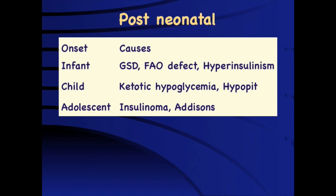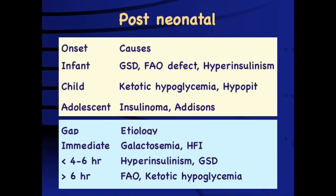In the post-neonatal age group, the age of onset gives clues. Conditions associated with the glycogenolytic or gluconeogenic pathway present around infancy, as do GHD and fatty acid oxidation defects. Childhood presentation between two to five years is typical of ketotic hypoglycemia and hypopituitarism, while adolescent presentations are more common in Addison's disease and rarely insulin-secreting tumors. An important pointer is the gap between meal and hypoglycemia: immediate post-meal hypoglycemia suggests galactosemia or fructose intolerance; a gap less than four to six hours suggests hyperinsulinism or glycogen storage disease; more than six hours suggests fatty acid oxidation defects or ketotic hypoglycemia.